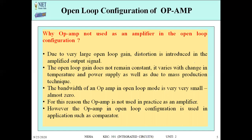Why do we need closed loop configuration when we can use the op-amp in open loop? First, due to the very large open loop gain, distortion is introduced in the amplified output signal. The gain is not constant because temperature effects and supply voltage changes cause the output and gain to change. Additionally, the bandwidth of open loop gain is very small, whereas our requirement is infinite bandwidth. These are the reasons we consider closed loop gain.